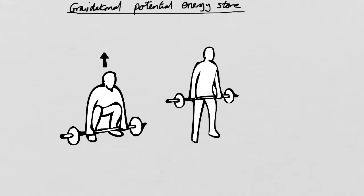In a previous video we've looked at work done. You know that work done is equal to the force that you apply times the distance that you move the object. So work done is force times distance.